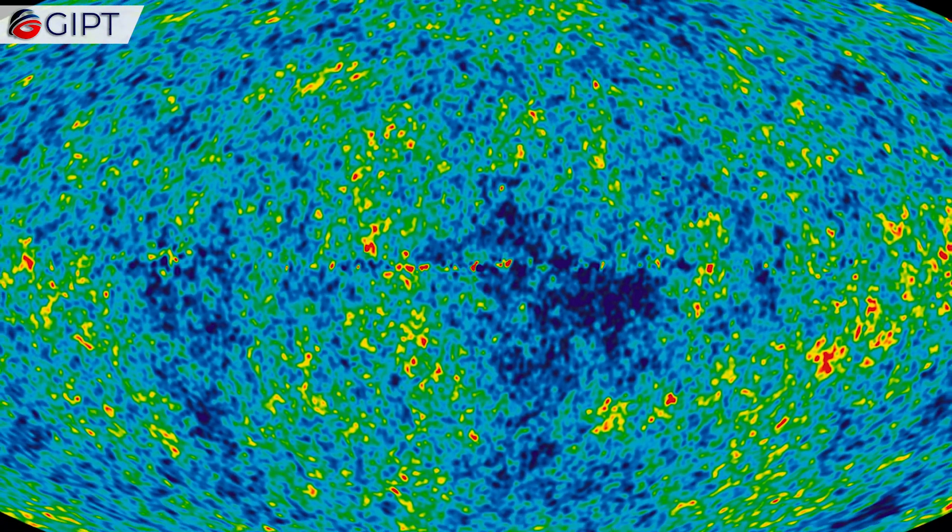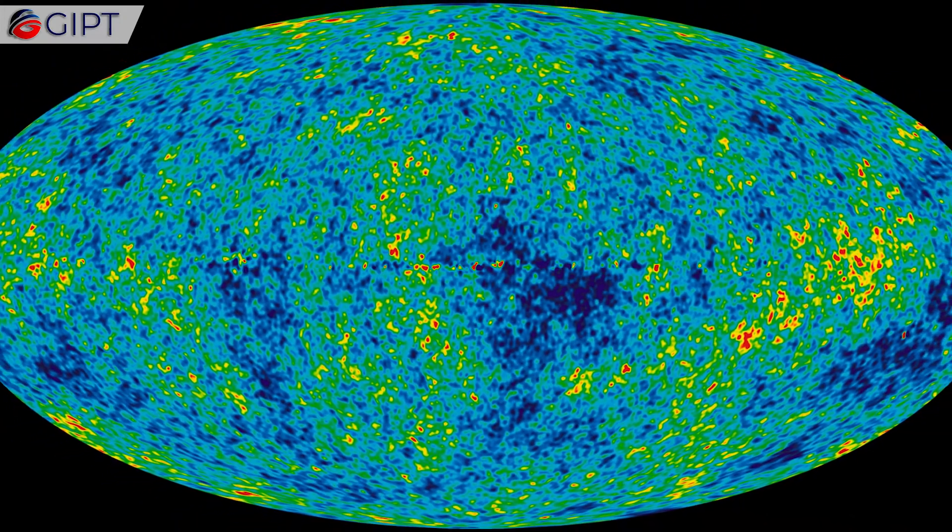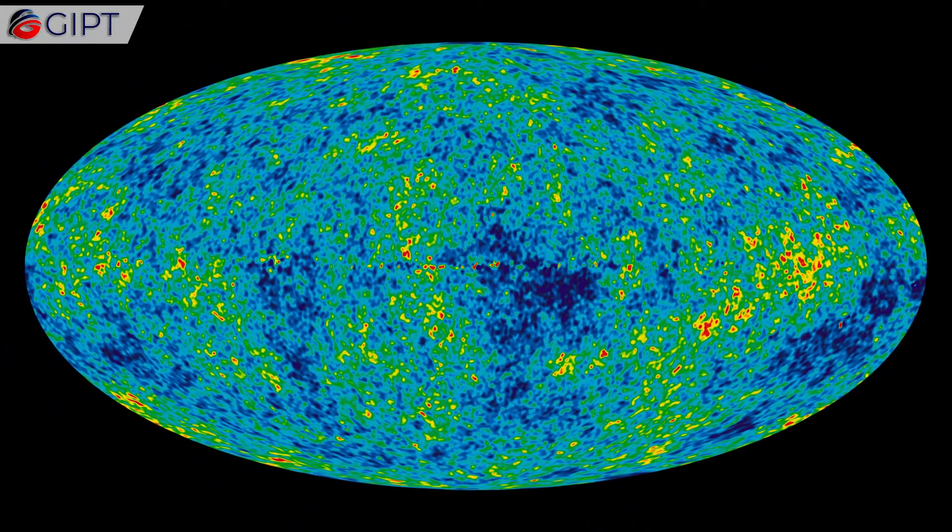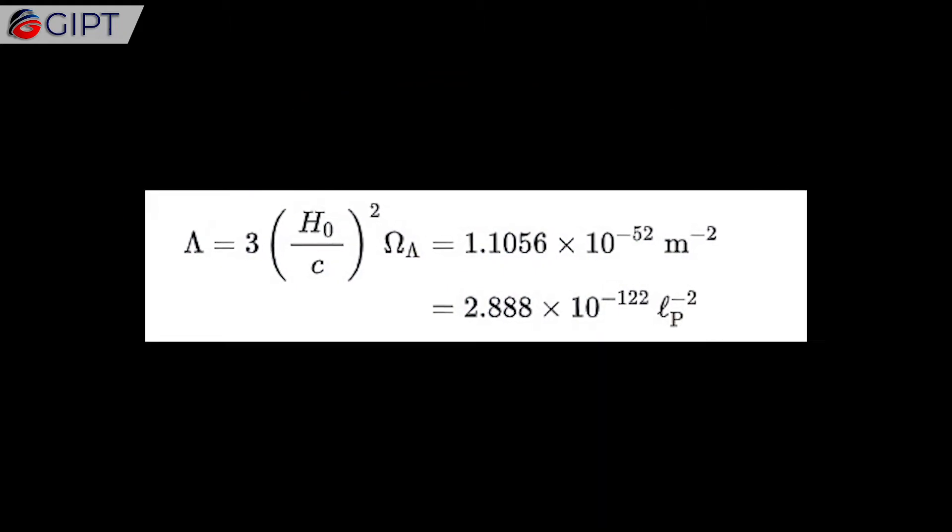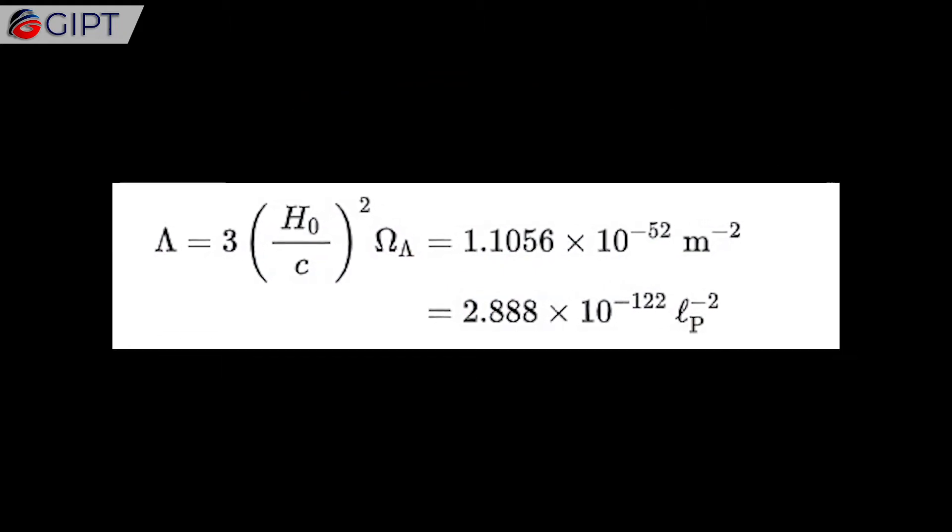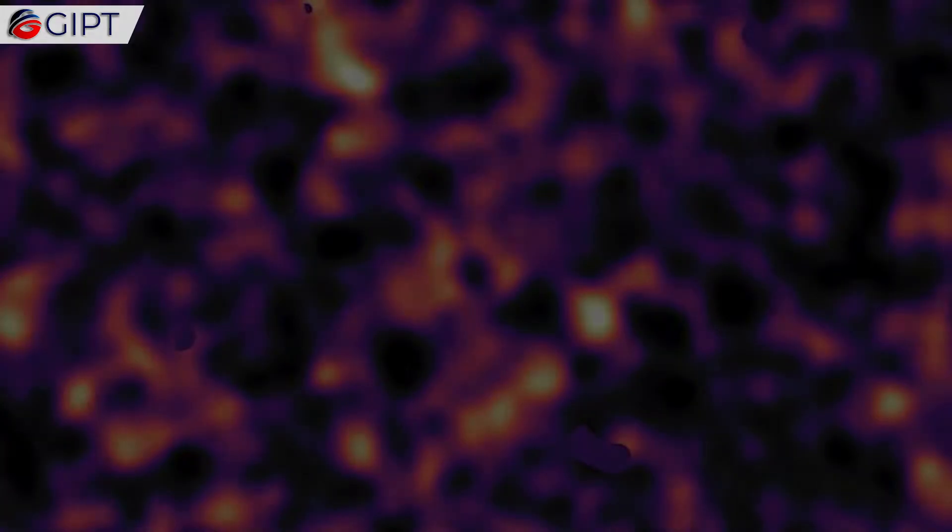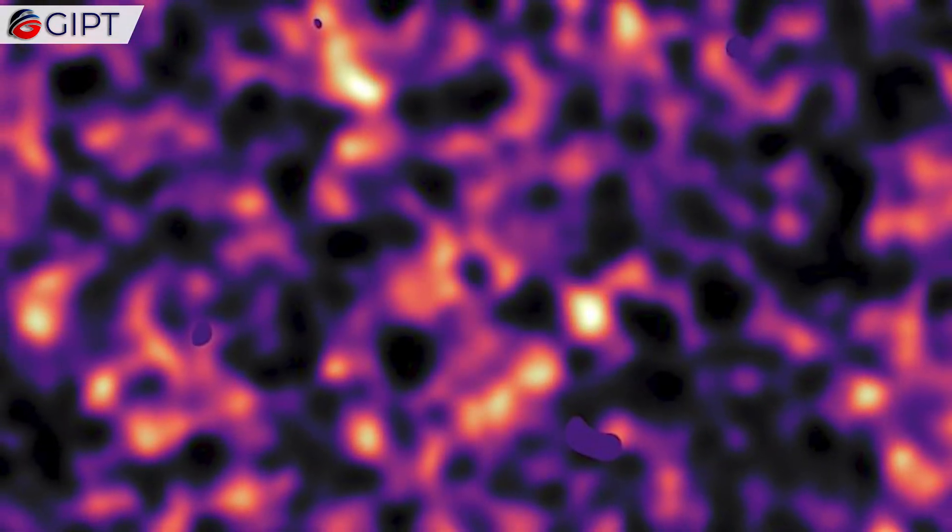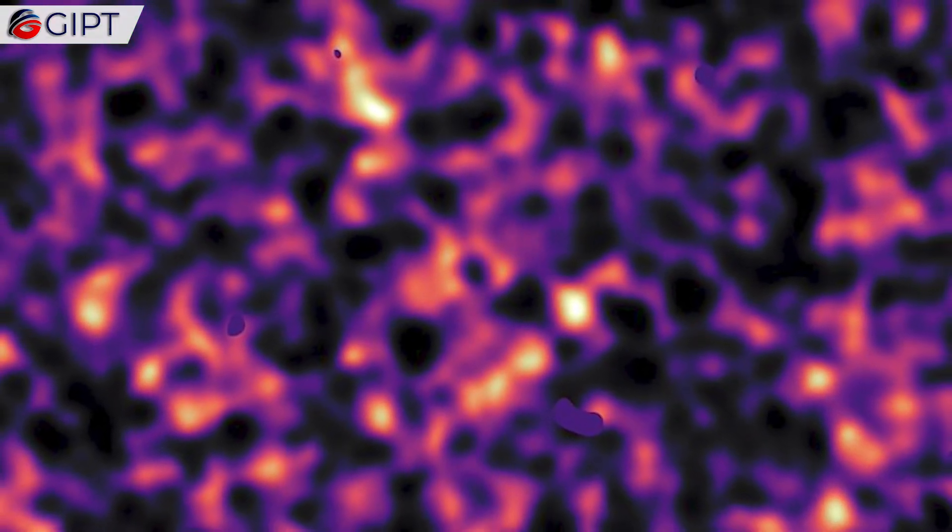What happened was that the equation still needed the cosmological constant. Without it, the equation was indeed not balanced. Scientists acknowledged this and added a cosmological constant into Einstein's original equations. They now see the cosmological constant as representative of a mysterious force called dark energy, which is causing the universe to expand at a faster and faster clip.